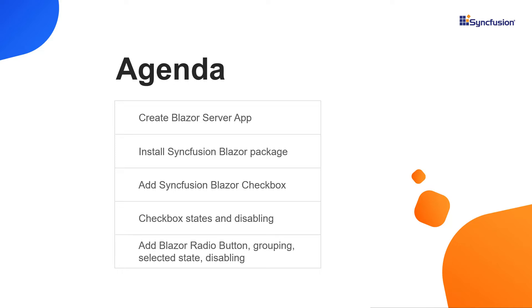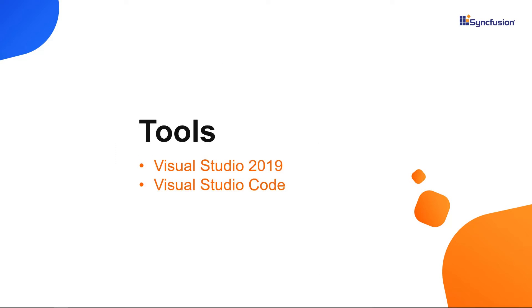To explore the features available in checkbox and radio button components, visit our website link provided in the above YouTube card. You can create a Blazor application using either Visual Studio 2019 or Visual Studio Code.